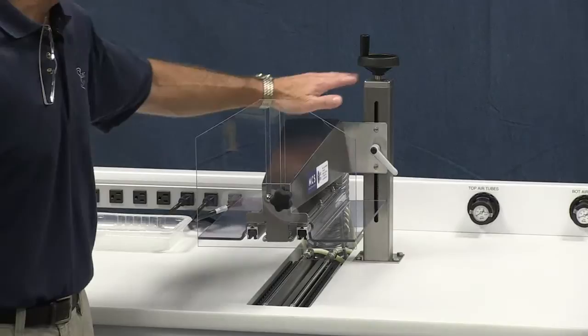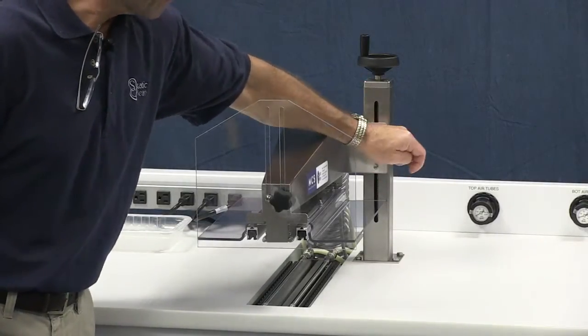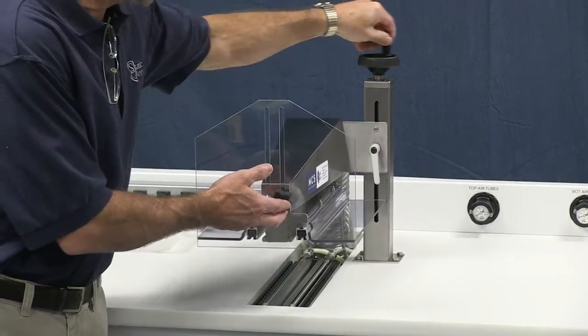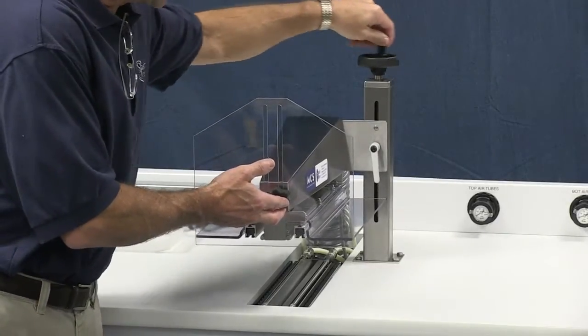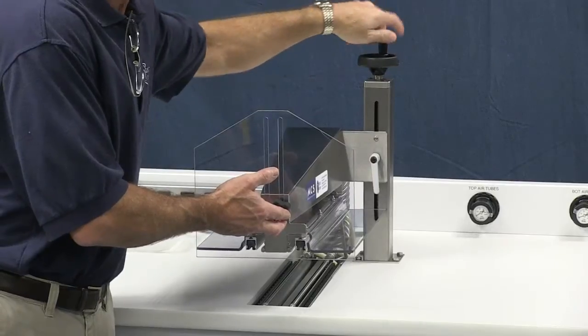The top hood is mounted in a vertical column that can easily be adjusted by simply loosening a lever and turning the hand wheel, so that the top hood can easily be adjusted for parts ranging in size from a half inch deep to six inches deep.